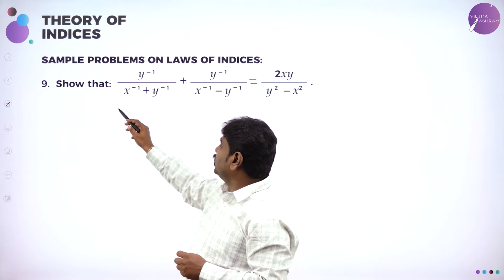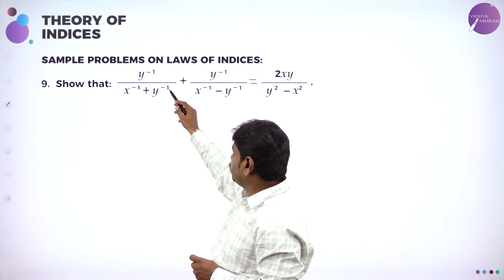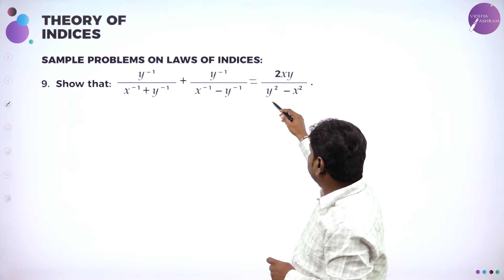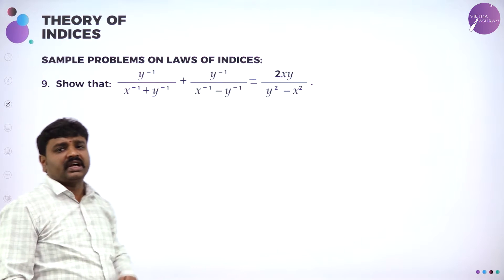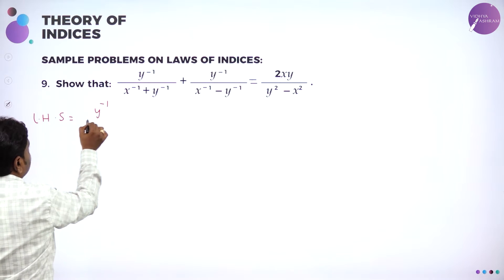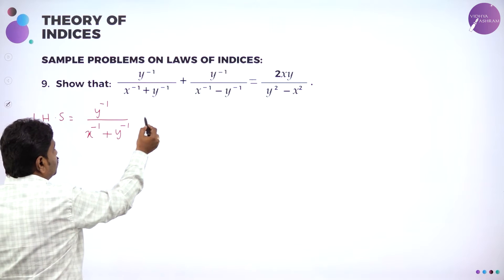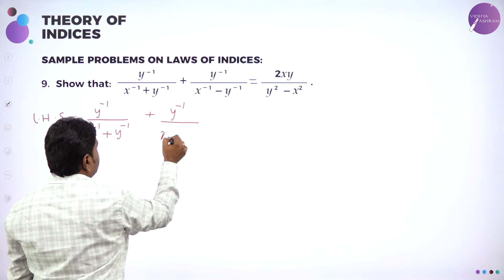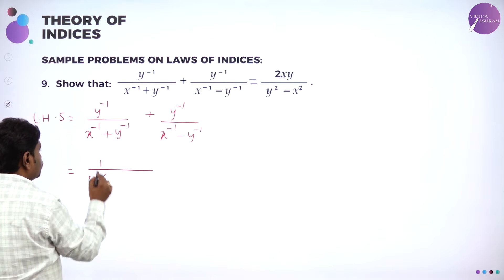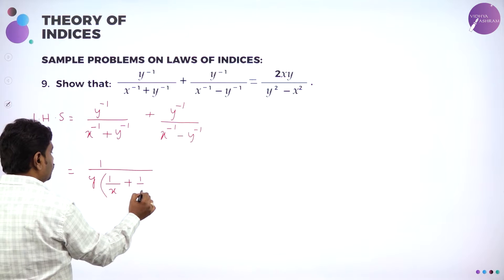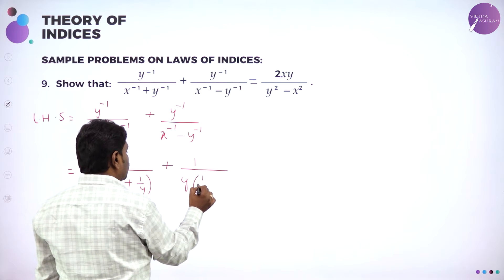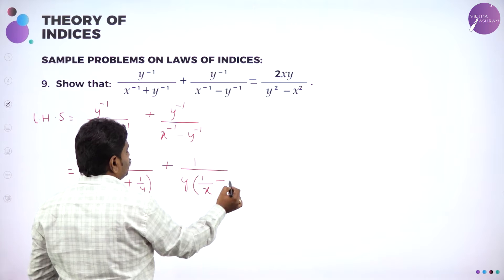Now we will go to the next problem. Show that y^(-1) by (x^(-1) + y^(-1)) plus y^(-1) by (x^(-1) minus y^(-1)) equals 2xy by (y² minus x²). Take LHS and solve. All of you know y^(-1) can be written as 1 by y, and x^(-1) can be written as 1 by x.